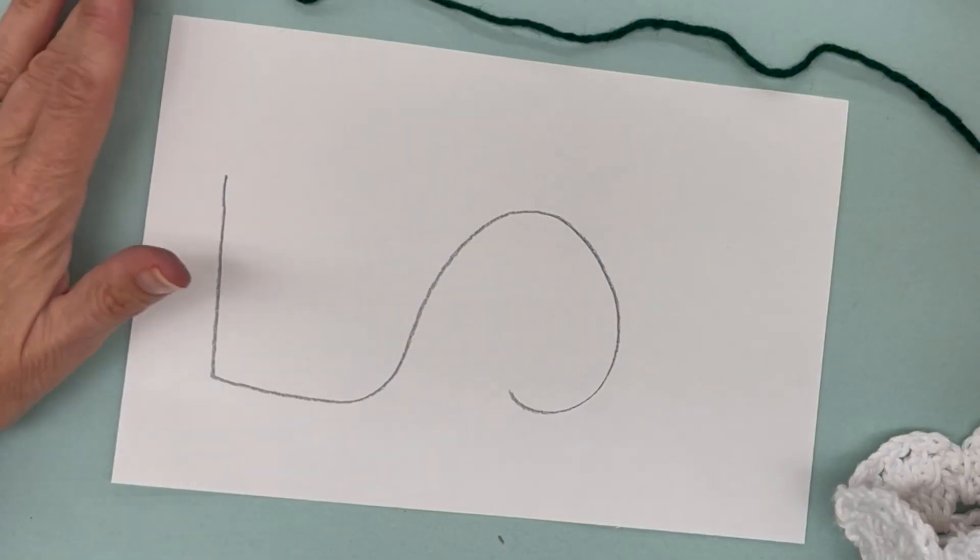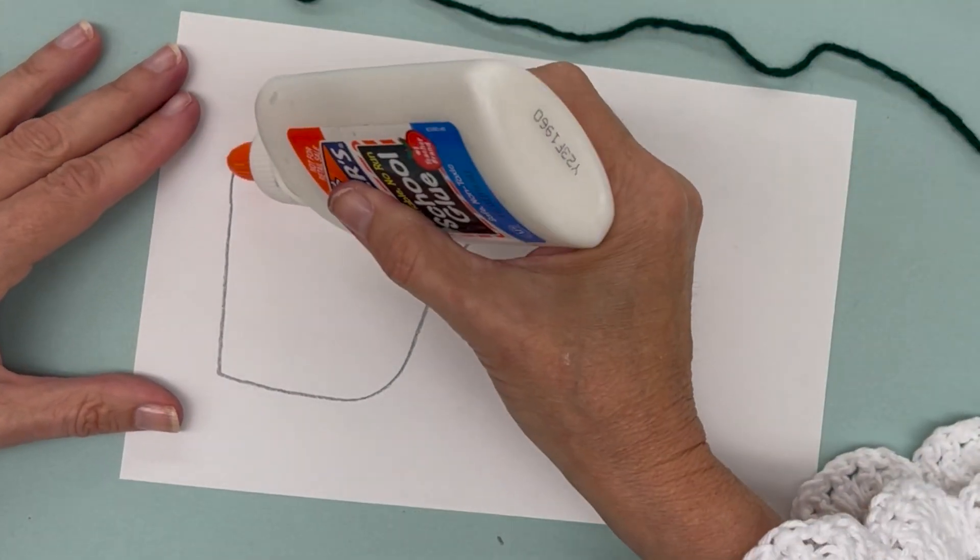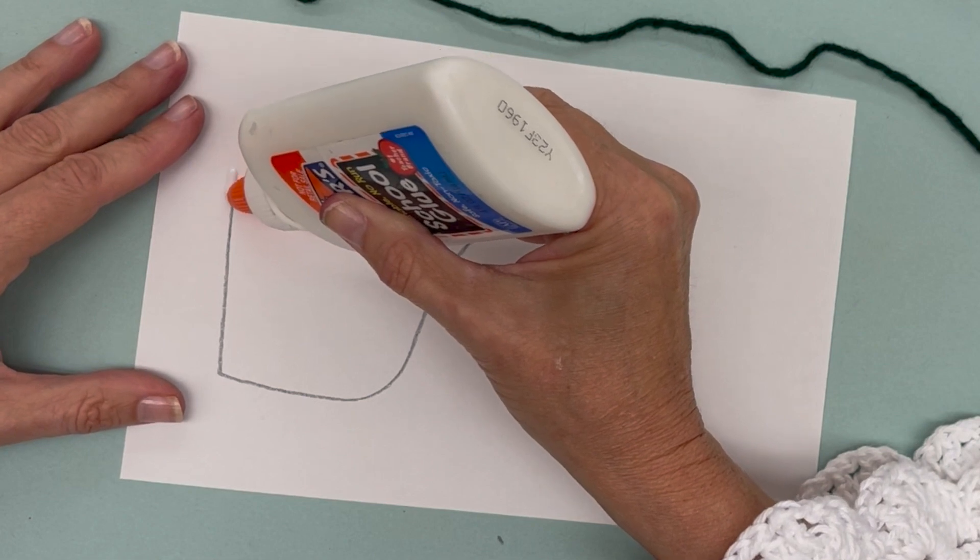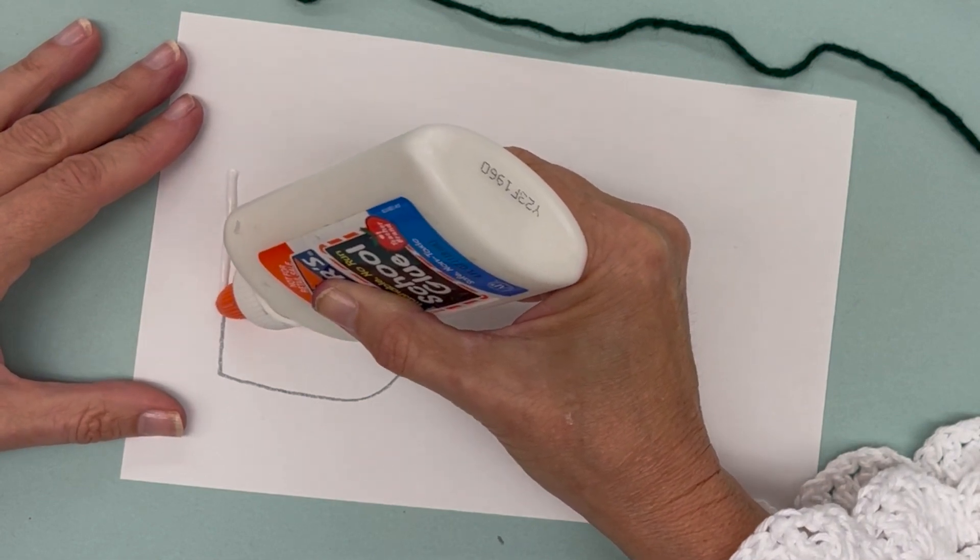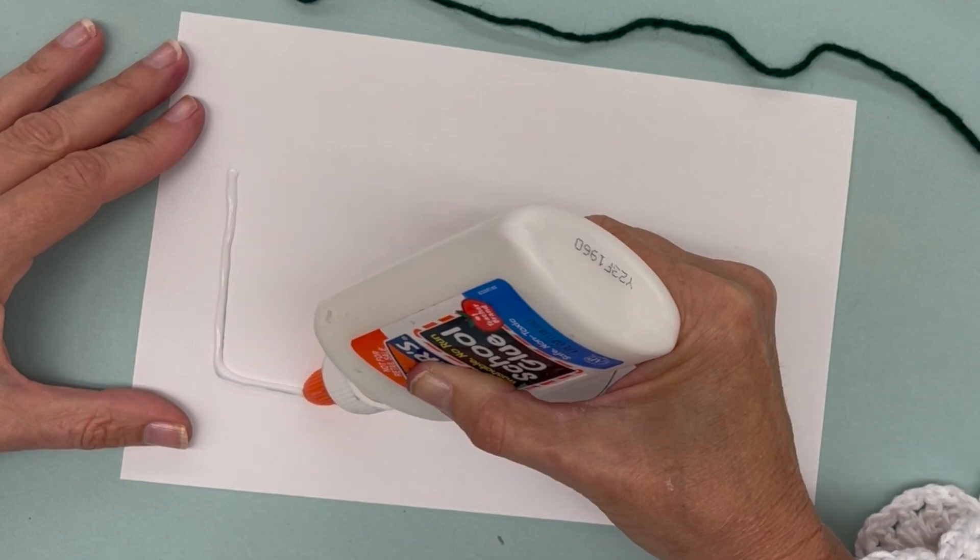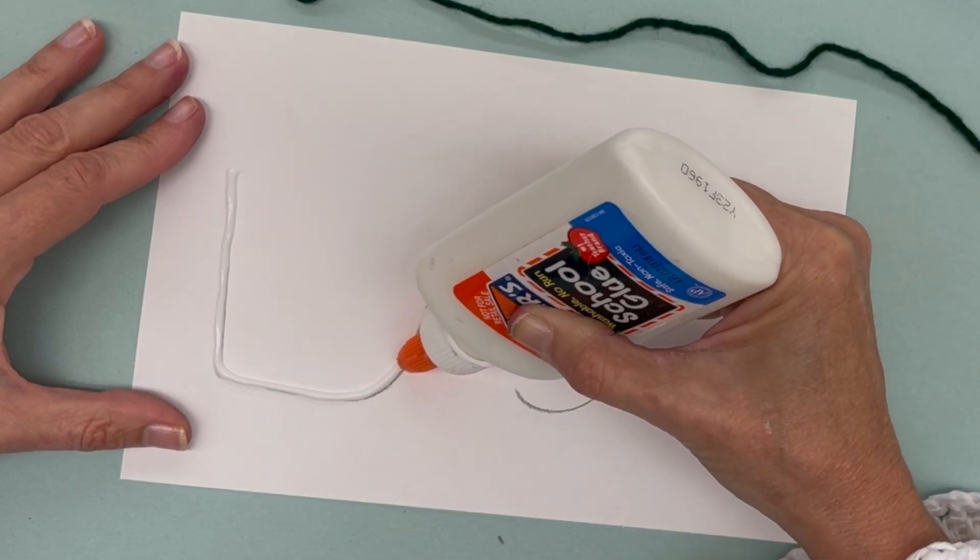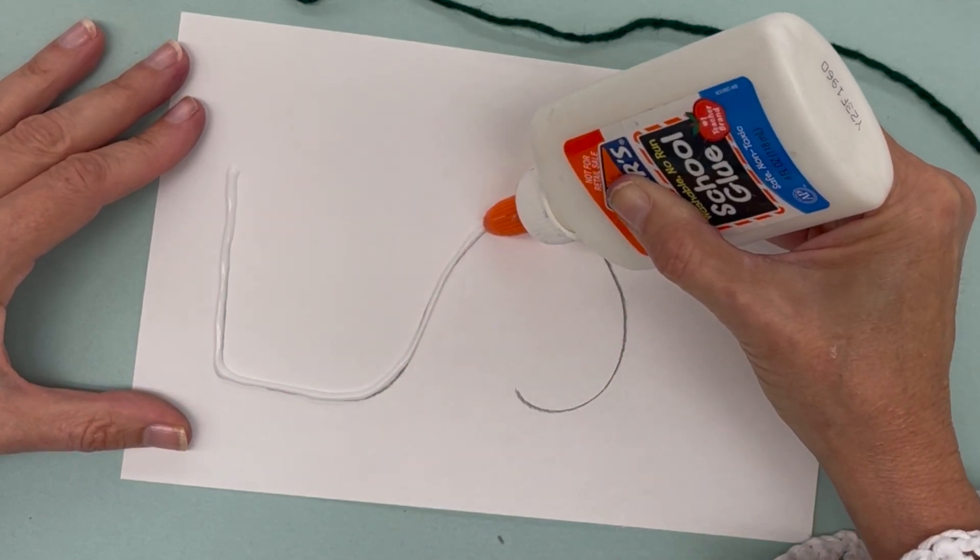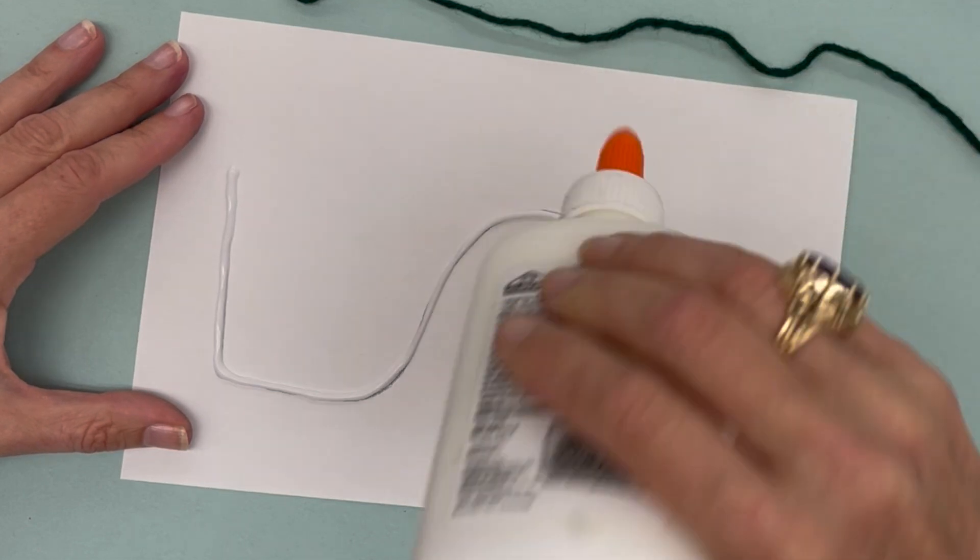We're going to put glue on the line and then we're going to put the yarn in the glue. For this we're going to need a little bit more glue than you use for gluing a piece of paper down.